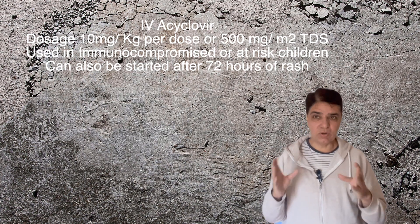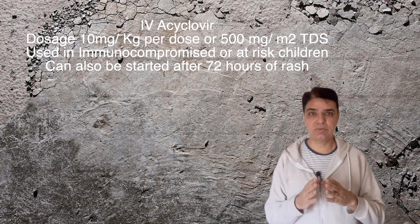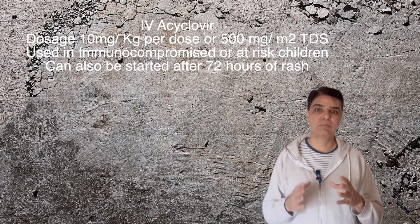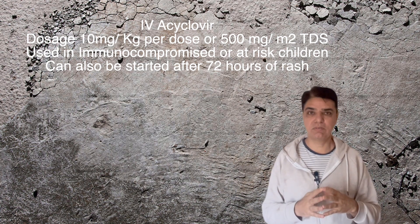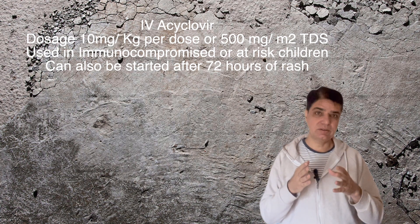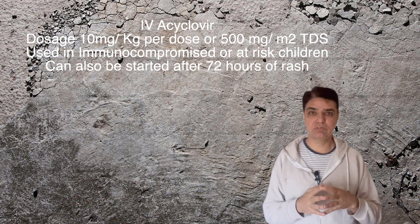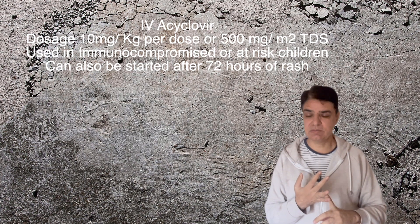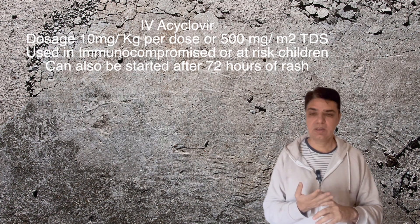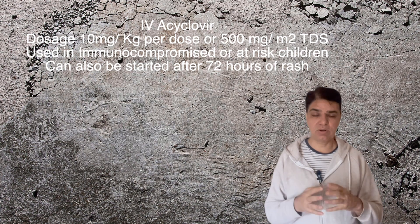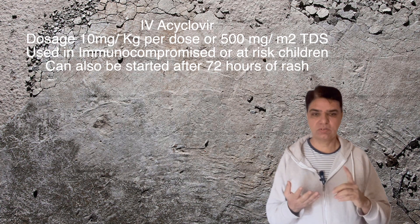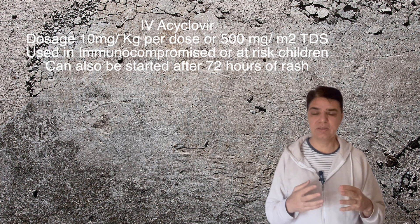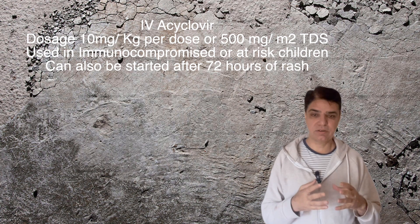Importantly, this is the only condition where IV acyclovir can be started even after 72 hours of rash onset. Indications include disseminated varicella zoster, severe varicella zoster, or potential complications such as pneumonia, severe hepatitis, thrombocytopenia leading to hemorrhagic varicella, or encephalitis with vomiting and seizures. These patients should be immediately started on intravenous acyclovir.